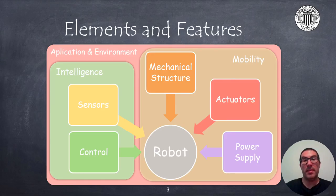Robots have a mechanical structure made up of links and joints. Links are powered by actuators, which in turn are powered by some source of energy. All these elements will mainly affect the robot's mobility. Robots also have a control system that will process data from sensors and, when put together, it will determine the degree of intelligence of a robot. The combination of all these elements will be affected by the application and the environment where the robot works.